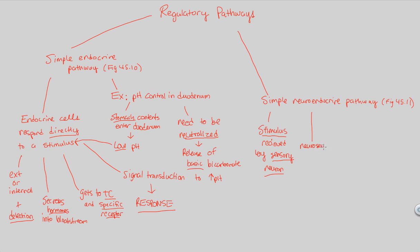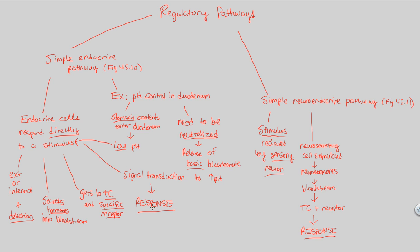In a simple neuroendocrine pathway, a neurosecretory cell — a specialized neuron — is stimulated, causing the release of neurohormones. Those neurohormones must travel far, so they enter the bloodstream. They eventually reach a target cell with the specific receptor that accepts the neurohormone, and finally produce the necessary and desired response. The end result is always a response to a stimulus that caused a change.